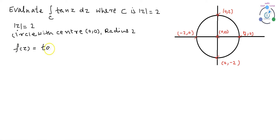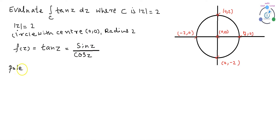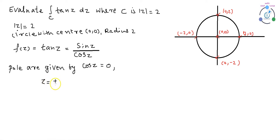Given f(z) = tan(z) = sin(z)/cos(z). Poles are given by cos(z) = 0, where z = ±(2n+1)π/2, for n = 0, 1, 2, 3, 4...